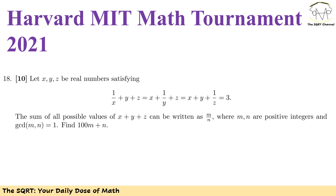and we have x plus y plus 1 over z. We know that these three expressions equal to 3. The thing that we are going to find is the sum of all possible values of x plus y plus z.